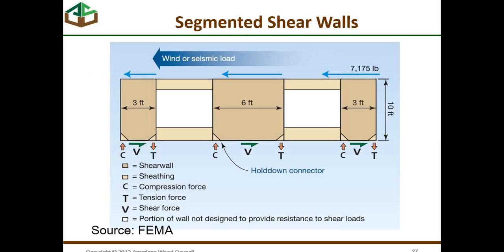Here is our segmented shear wall — this graphic comes from the Wood Frame Construction Manual. In this particular case, these are the segments: a 3-foot-wide segment at one corner, a 3-foot-wide segment at the other corner, and a 6-foot-wide segment in the center. We basically discount the shear resistance of anything in between those segments because they have windows in them. We would take 7,175 pounds of force on the right-hand corner and distribute it across 12 feet of segmented wall — 3 feet plus 6 feet plus 3 feet — so the shear resistance V would be 7,175 divided by 12.